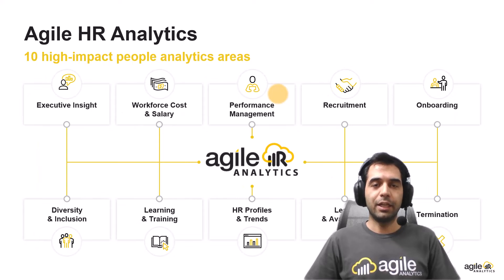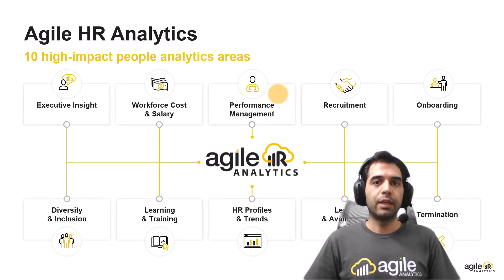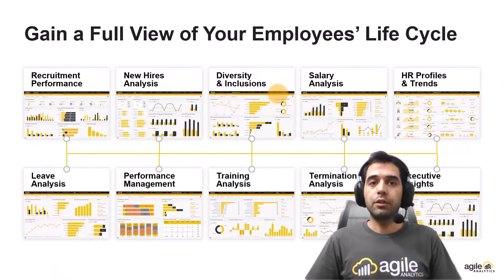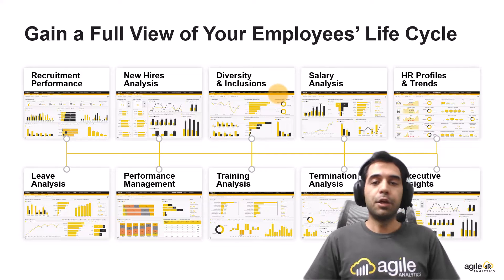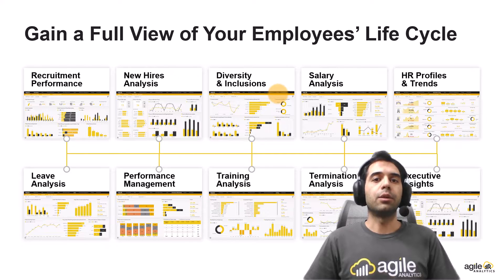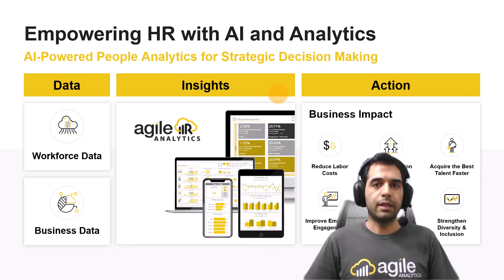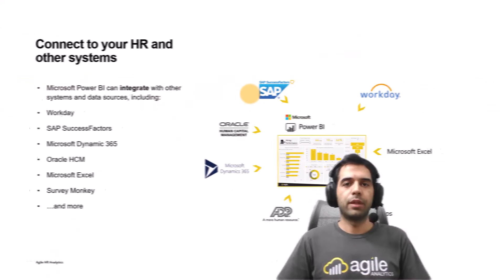Agile HR Analytics is a pre-built dashboard with over 40 different reports which covers 10 high-impact people analytics areas. You can check the recruitment process, new hires in your organization, diversity and inclusion, termination analysis, performance, leave analysis, and many other things in one dashboard. You can combine workforce data and business data all together in one place and empower your HR dashboard using AI.